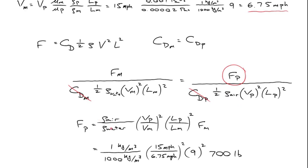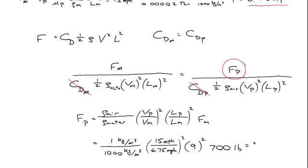Plugging in numbers: the density ratio of air to water is one over a thousand, the prototype velocity is 15 miles an hour, the model velocity is 6.75 miles an hour to maintain similitude, the length scale ratio is nine, and the measured drag on the model is 700 pounds. So the actual drag on the prototype is 280 pounds. It may seem strange that something nine times bigger has less than half the drag force, but consider that the blimp is flowing through air instead of water — the density is a thousand times less — so even though it's nine times bigger, the drag force is actually less.